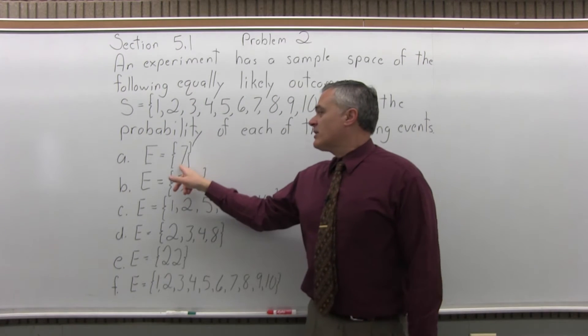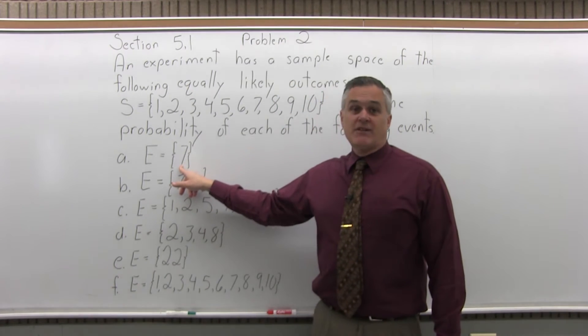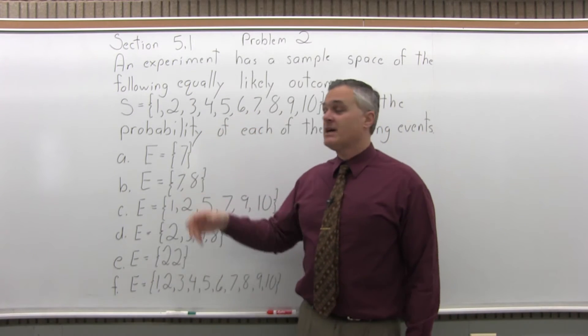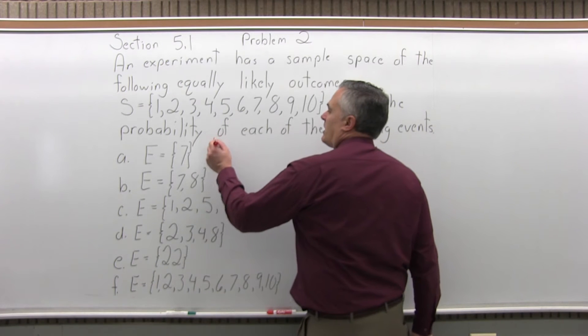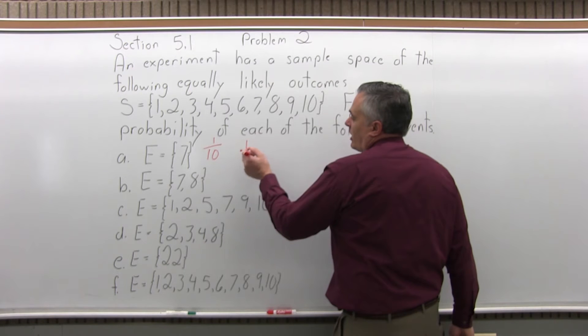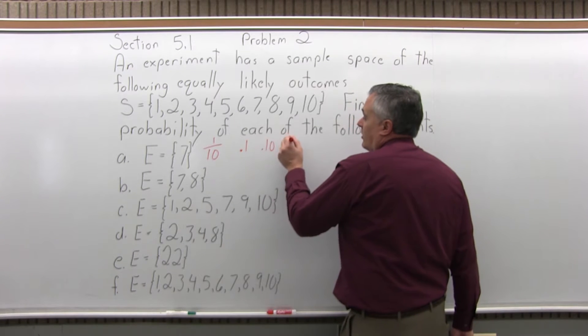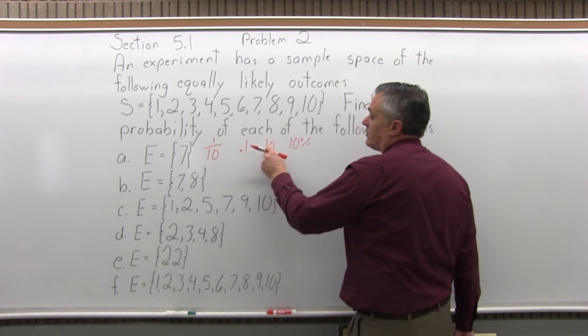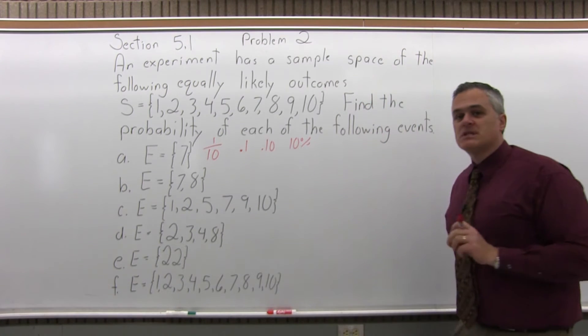So the probability of getting an event or a result of just 7. Well, 7 is one of the things that can happen out of 10 altogether. So the probability would be 1 tenth. And that can be written as 0.1 or 0.10 or, if you like, 10%. Any of those answers are acceptable. 1 over 10, 0.1, 0.10, or 10%. They all mean the same thing.